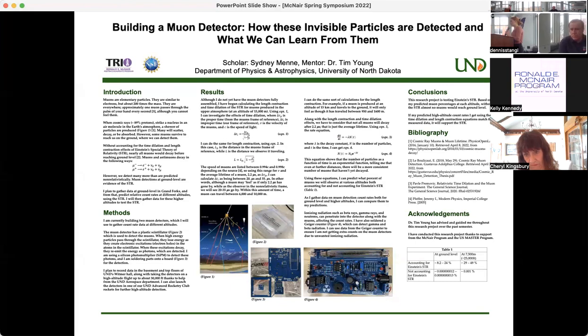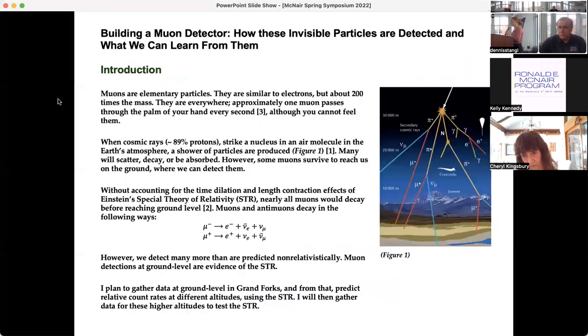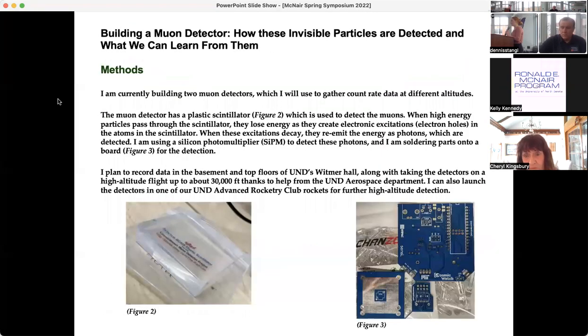For my project, I'll be gathering data at the ground level, and then I'll be using those count rates that I'm getting to predict different count rates at higher altitudes. Then I will be actually measuring the count rates at those higher altitudes. So I am building two muon detectors to get count rates at different altitudes.